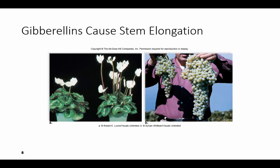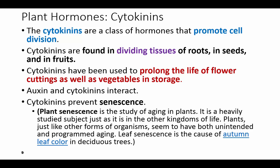Cytokinins are hormones that promote cell division and you find these in the dividing tissues of roots, in seeds, and in fruits. They prolong the life of flower cuttings as well as prolong the life of vegetables when they're being stored. The auxin and the cytokinins interact, and the cytokinins prevent senescence, which is just aging in plants. That's what's responsible for the leaf color that changes in the autumn in our deciduous trees.